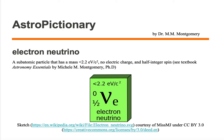An electron neutrino is a subatomic particle that has a mass less than 2.2 eV per c squared, no electric charge, and half-integer spin.